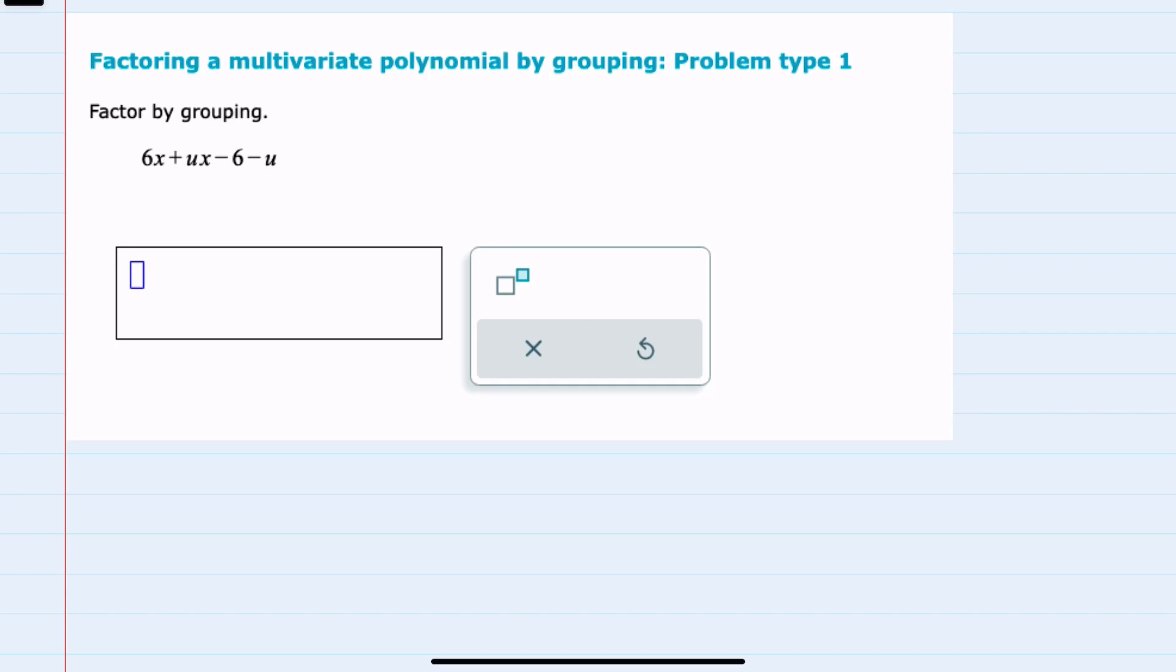In this video I'll be helping you with the ALEKS problem type called Factoring a Multivariate Polynomial by Grouping, Problem Type 1. We're asked to factor here by grouping.